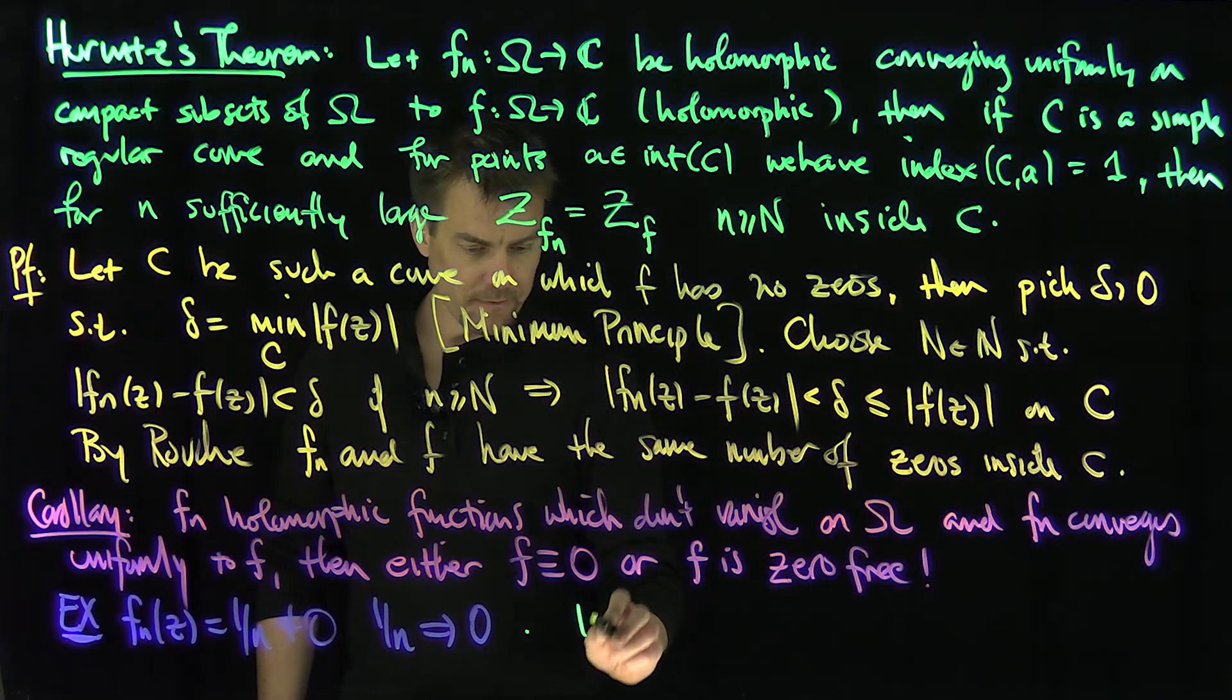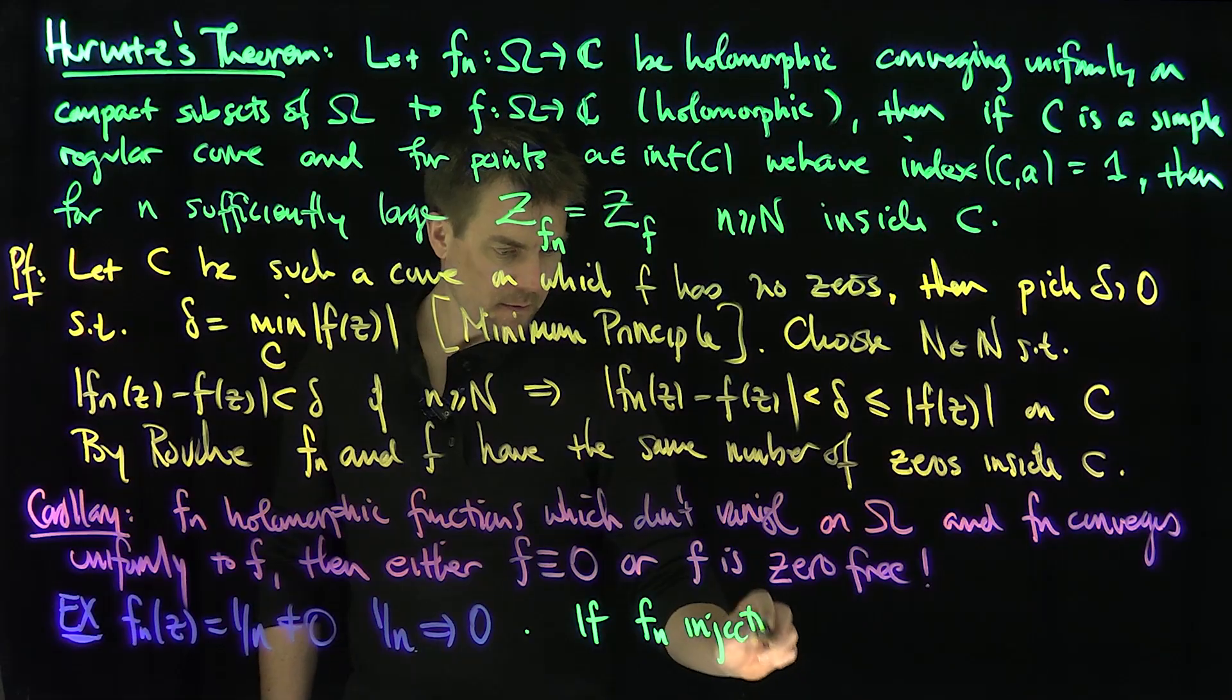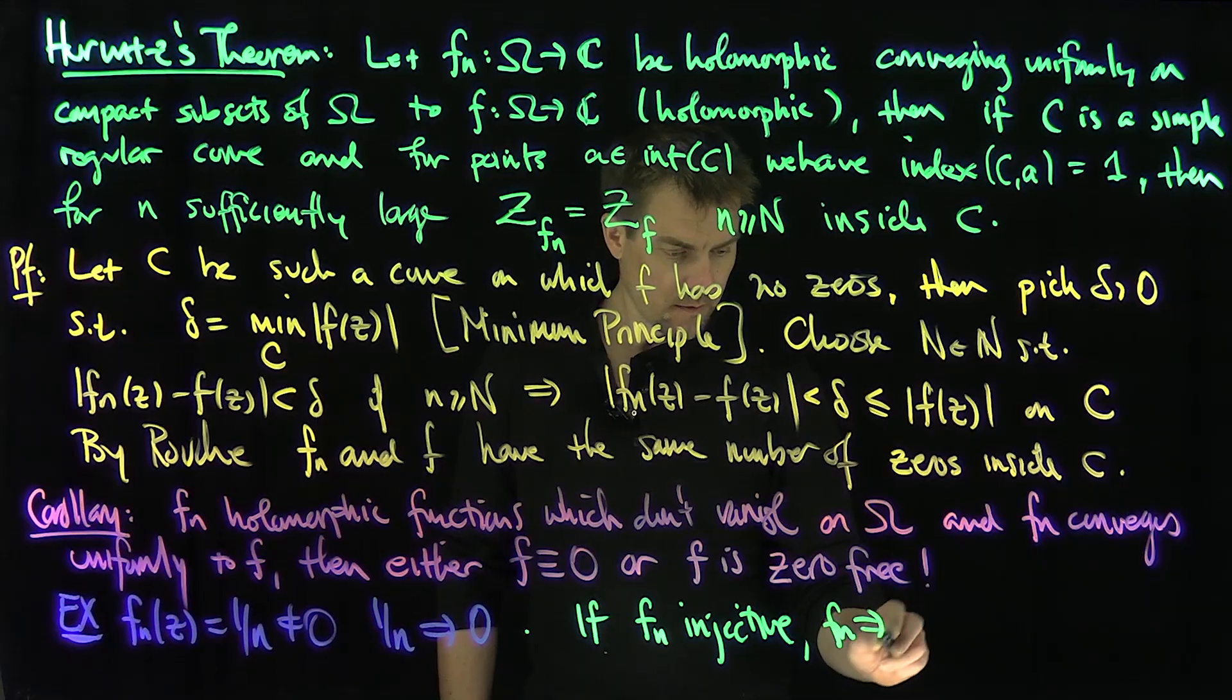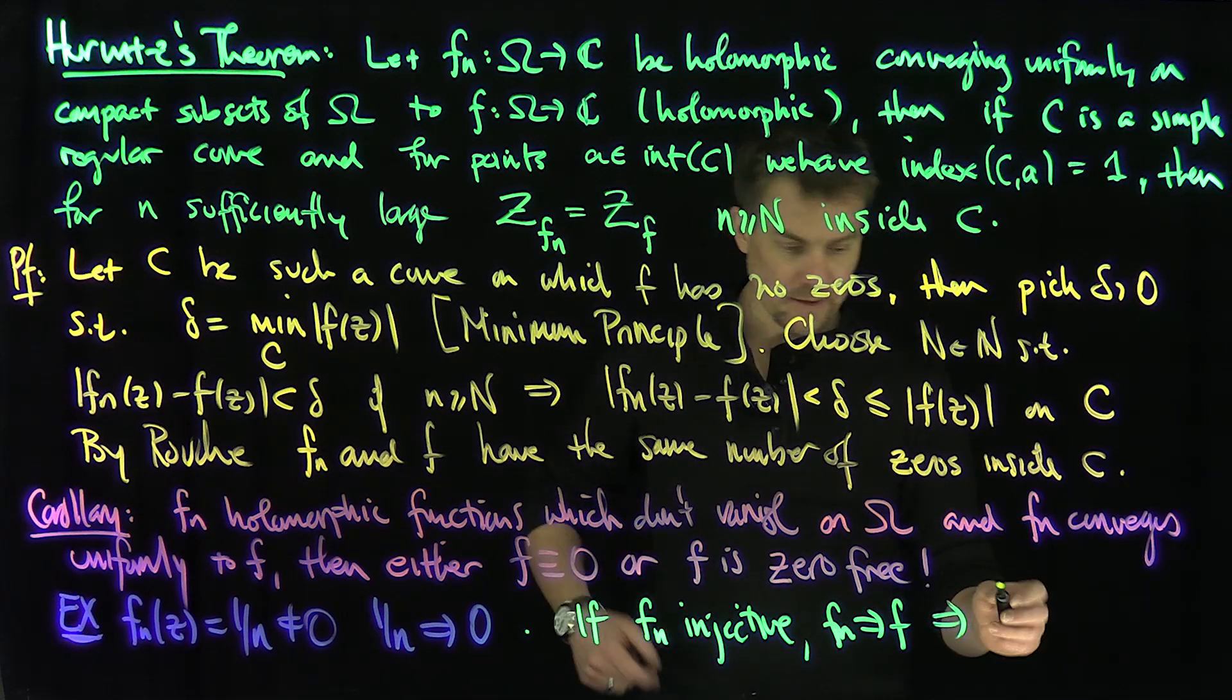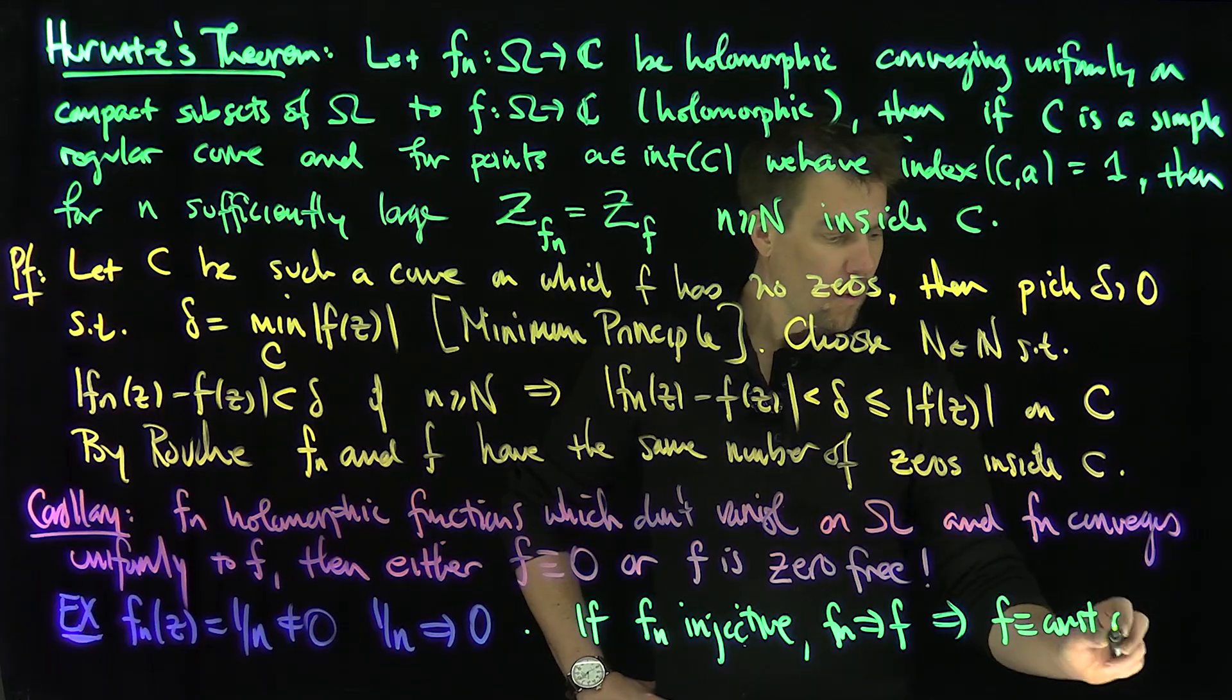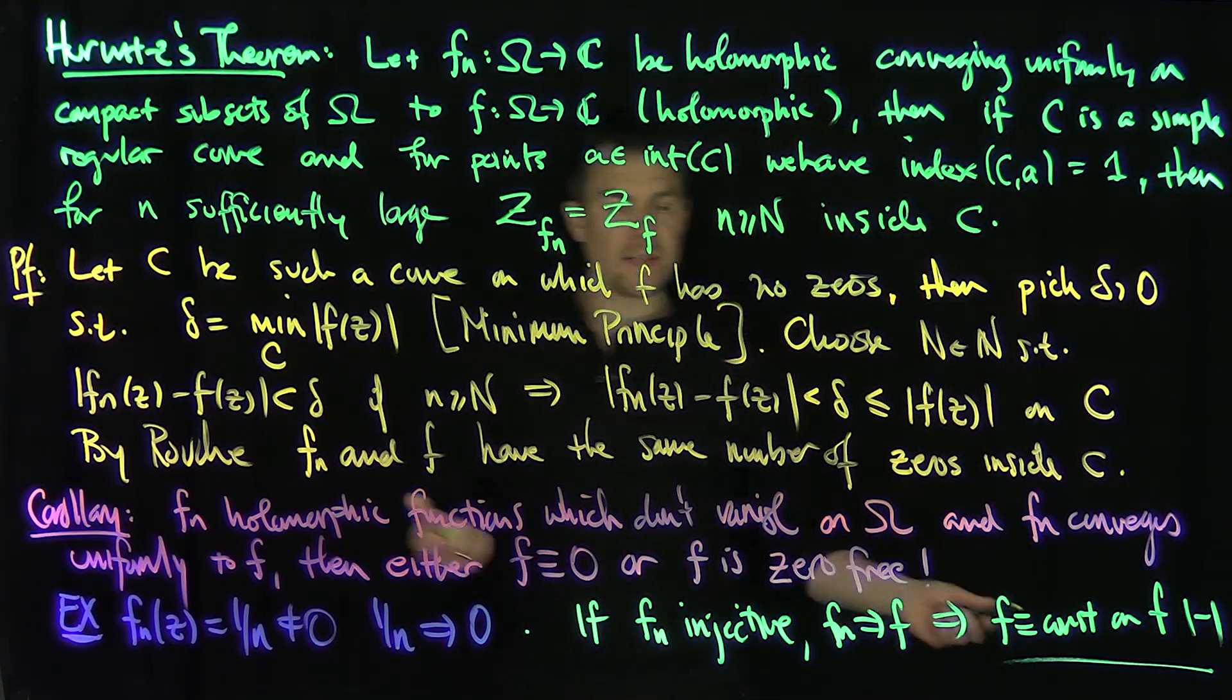also if fn are injective and converge uniformly, that says that either f is identically equal to zero or f is constant, or f is injective, f one-to-one. So in other words, that's the dichotomy.